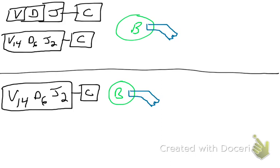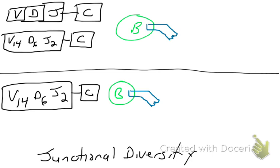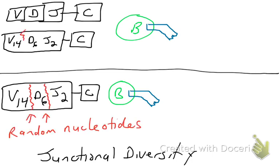But these cells will end up making slightly different proteins because of a process known as junctional diversity. What this process is going to do is introduce random nucleotides in the junctions between gene segments, so that when you have an open reading frame in the top B cell and an open reading frame in the bottom B cell, they are not 100% identical. There's going to be differences between these two, even though they're using the same exact DNA gene sequences.